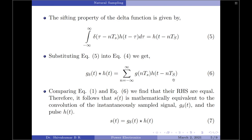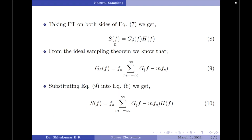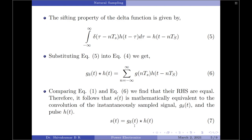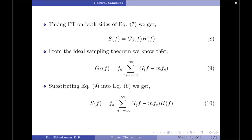Therefore the left-hand sides can also be equated, as shown in equation 7: s(t) = g_delta(t) convolved with h(t). Now taking the Fourier transform of both sides of equation 7, we get S(f) = G_delta(f) times H(f), where g_delta(t) transforms to G_delta(f), h(t) transforms to H(f), and s(t) transforms to S(f).